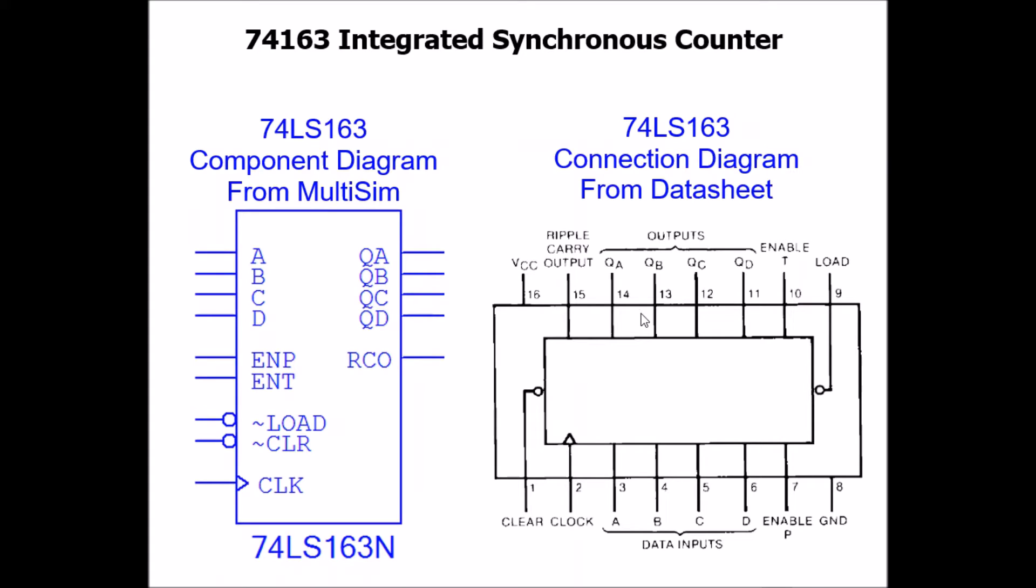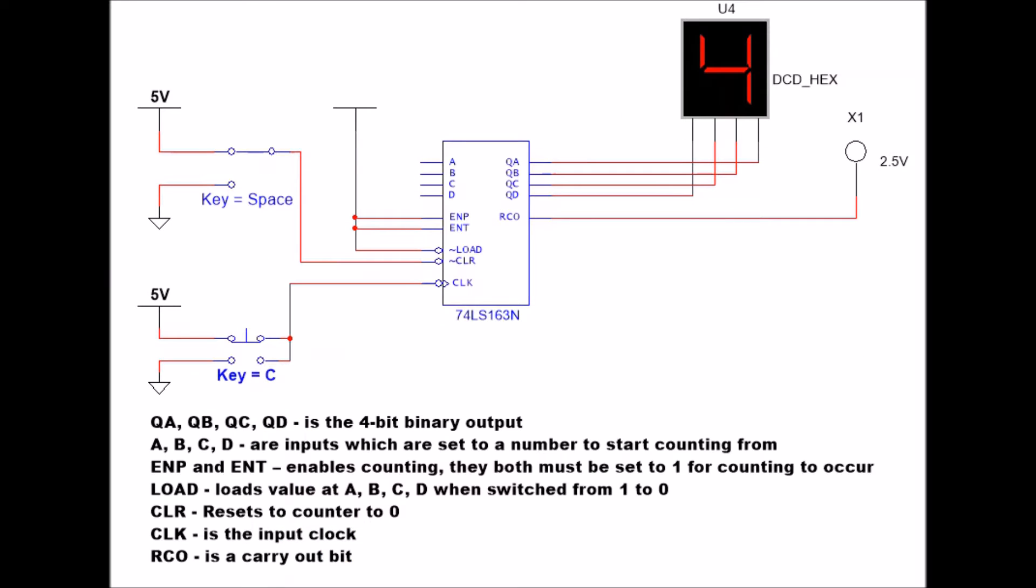Alright, let's take a look at how this works. Here's what the chip looks like in Multisim. I have it connected in a pretty simple way, and I could count through it. Here I am running the clock, I have a little push button thing for my clock. It goes from zero up to 15, and then it starts again: A, B, C, D, E, F, back to zero.